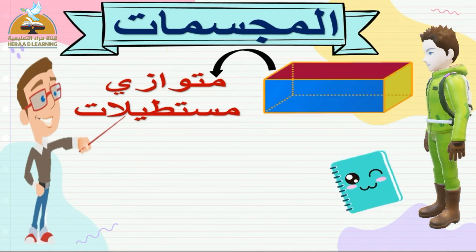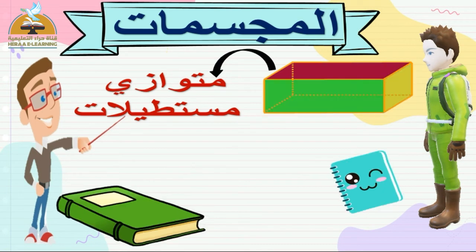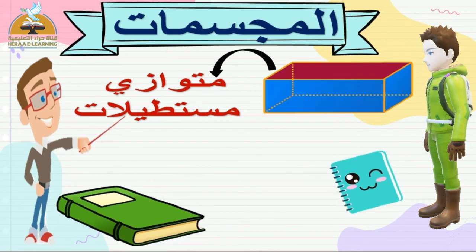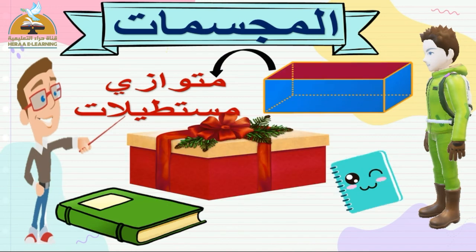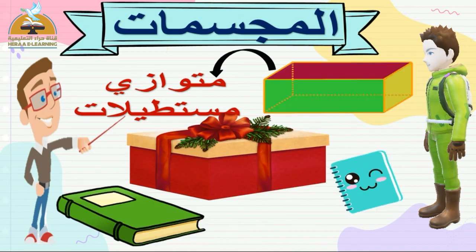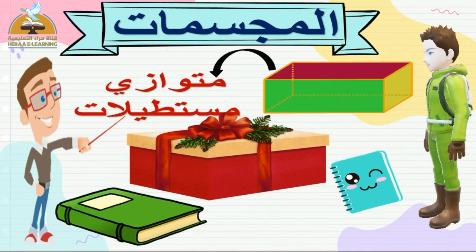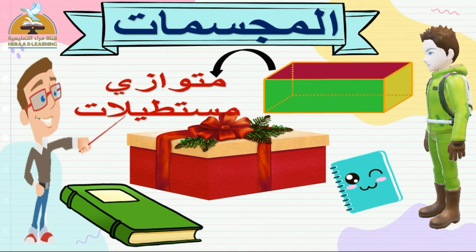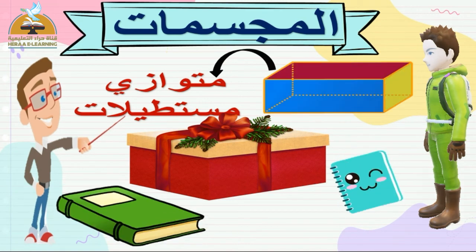أمثلة على متوازي المستطيلات: زي الكتاب بتاعك، بص كده على شكل الكتاب يشبه متوازي المستطيلات. وزي علبة الهدايا اللي قدامي دي برضو على شكل متوازي المستطيلات.